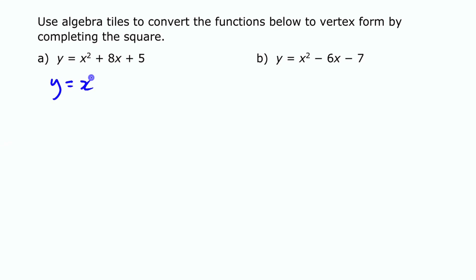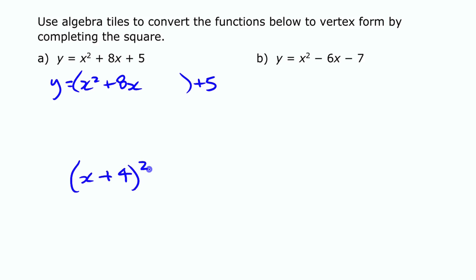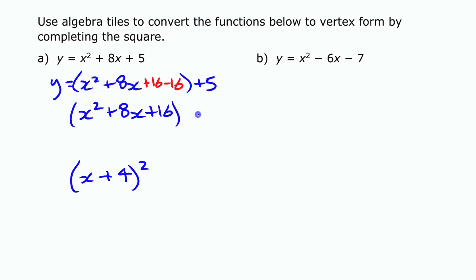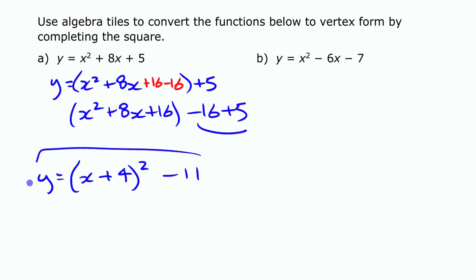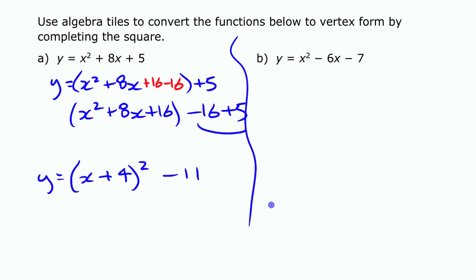So essentially what we did was look at x squared plus 8x, leave the 5 to the side, and group that part as though we were going to make a square out of it — which would eventually be x plus 4 all squared. We needed to add 16 and subtract 16. The plus 16 became part of the square; the minus 16 and the 5 combined to give minus 11. This whole thing became x plus 4 squared minus 11 — equivalent to what we started with, just in vertex form.